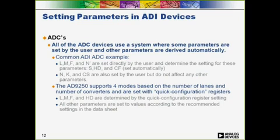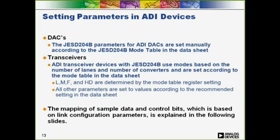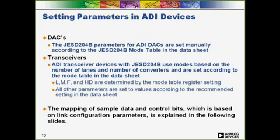The AD9250 has a quick configuration register for user convenience in setting one of its four supported JESD204 modes. The quick config register sets the L, M, F, and HD parameters; the remaining parameters are set according to datasheet recommendations. For ADI DACs, link configuration parameters are set manually using the JESD204 mode tables in the datasheet, with up to 11 modes supported. Similarly, ADI transceiver products using JESD204B use modes based on the number of converters and lanes, with L, M, F, and HD determined by the mode and all other parameters set manually.